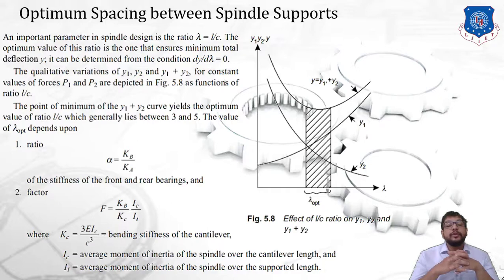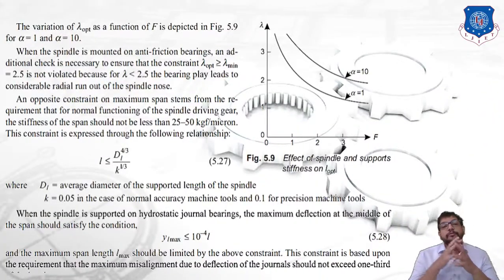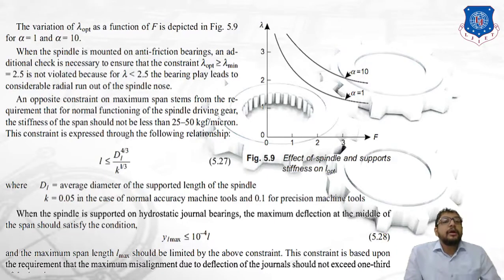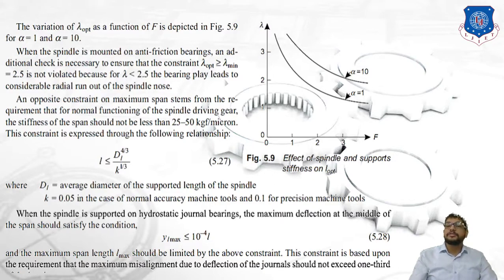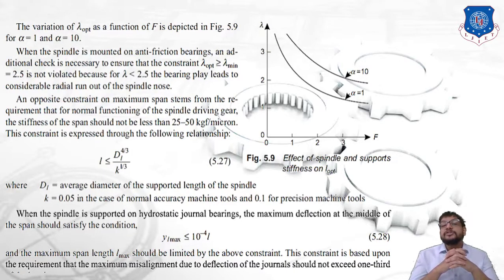Here k_c = 3EI_c / c³ is the bending stiffness of the cantilever, I_c is the average moment of inertia of the spindle over the cantilever length, and I_L is the average moment of inertia over the supported length. The variation of λ_optimum as a function of F is obtained from figure 5.9, with F on the x-axis and λ on the y-axis, for two cases: α = 1 and α = 10. When the spindle is mounted on anti-friction bearings, an additional check is necessary to ensure λ_optimum ≥ λ_minimum = 2.5, because for λ < 2.5 bearing play leads to considerable radial runout of the spindle nose.